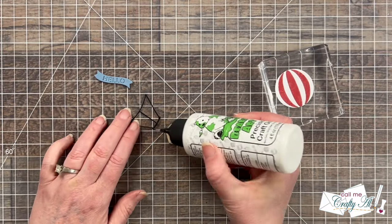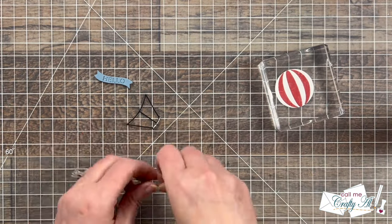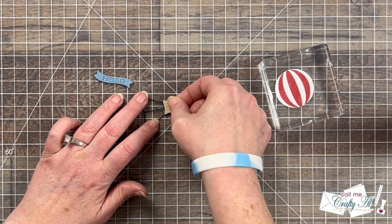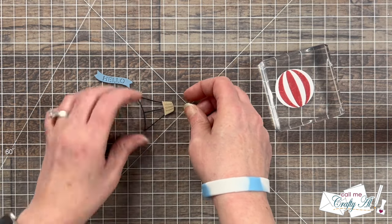When I had that together I added the basket to the string, the little black piece, and I just put some glue on the top of the bottom and put that in place.